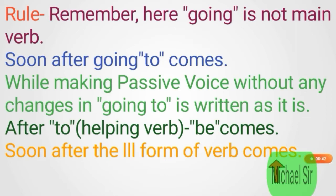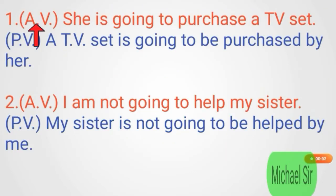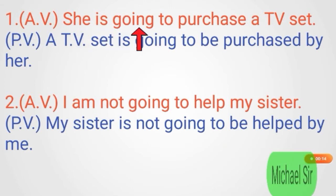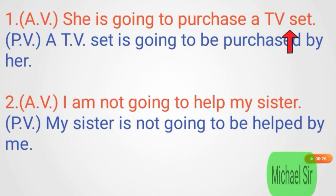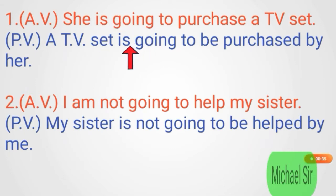Example one — Active voice: 'She is going to purchase a TV set.' Here 'she' is the subject, 'is going' is not the main verb, the main verb is 'purchase', and 'a TV set' is the object. In passive voice, 'a TV set' becomes the subject. Then we write 'is going to' as it is — 'is' is used because 'a TV set' is singular.